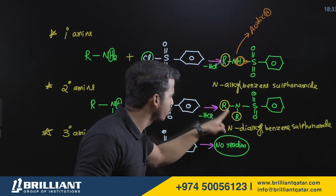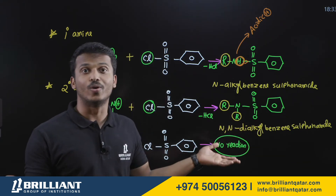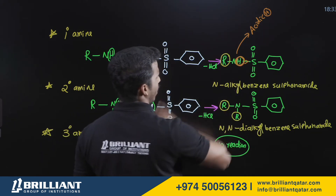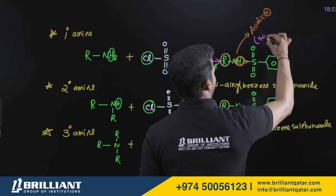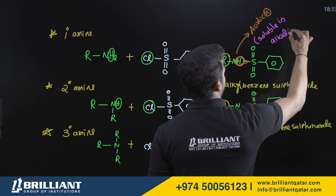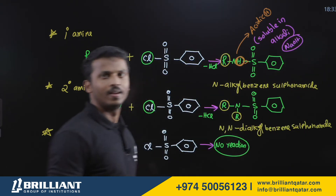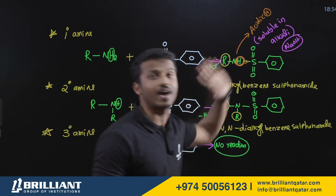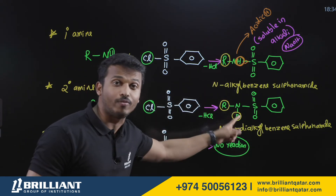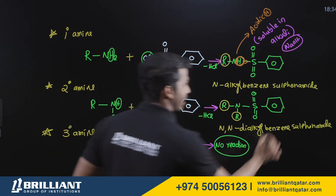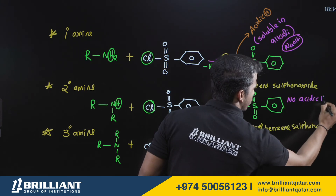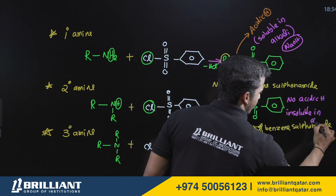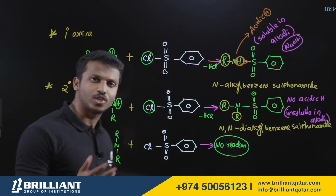In the secondary amine product, N,N-dialkyl benzene sulfonamide, both positions on nitrogen are alkyl groups — there is no acidic hydrogen. This is the key difference. The primary amine product has an acidic hydrogen, making the compound acidic, so it is soluble in alkali such as NaOH. The secondary amine product has no acidic hydrogen, so it is not acidic and is insoluble in alkali like NaOH.